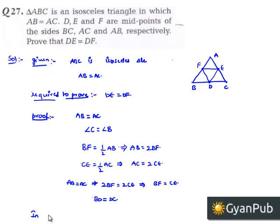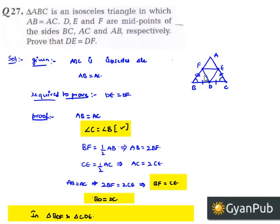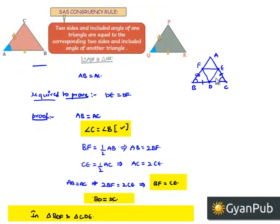Let us consider triangles BDF and CDE. In both triangles, angle B equals angle C, BD equals DC, and BF equals CE. By the SAS property, two corresponding sides and the angle included between them are equal.